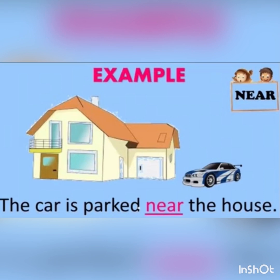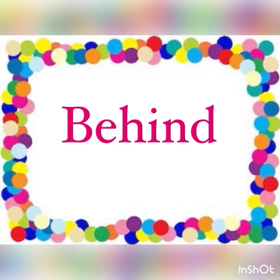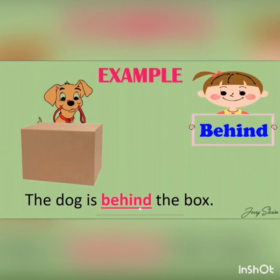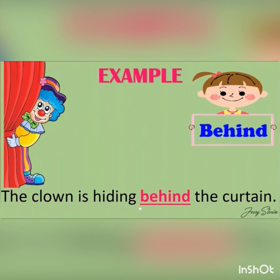Position word humara kya hai yahaan? Near. Behind means pichhe. Examples of behind: The dog is behind the box — dog kaha hai? Box ke pichhe. So the position word is 'behind'. The clown is hiding behind the curtain — clown curtain ke pichhe chupa hai. So the position word is 'behind'.